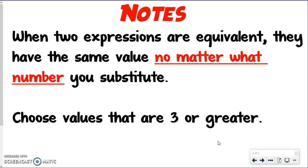It's not to say we can't choose 1, 2, or 0, or whatever. I just am going to suggest that you try and use 3 or greater, just so that you don't run into situations where they seem equivalent when they really aren't. Because all it needs is to be proven one time to not work, and then the expressions are not equivalent.